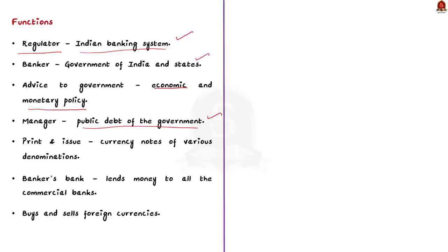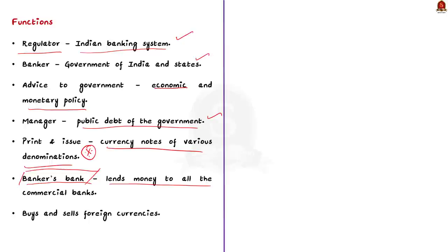RBI has a monopoly for printing currency notes in the country and has the sole right to issue currency notes of various denominations. Fourthly, the Reserve Bank lends money to all commercial banks of the country — for this reason we call RBI as banker to banks. Finally, the Reserve Bank buys and sells foreign currencies and protects the country's foreign exchange funds. RBI sells foreign currency in the forex market when supply decreases and buys when supply increases. These are the important functions of the RBI.